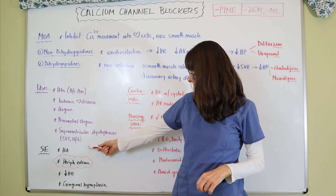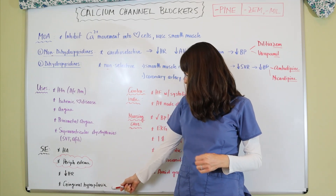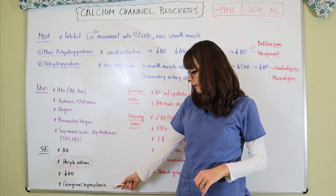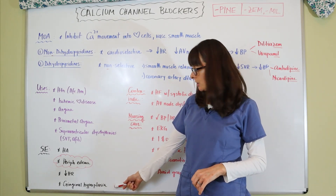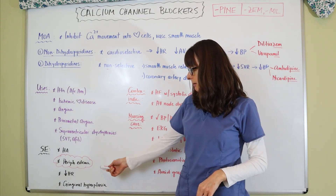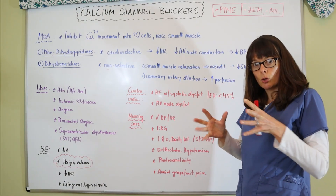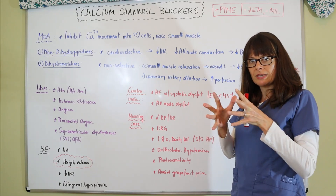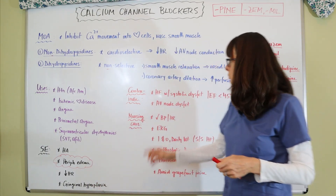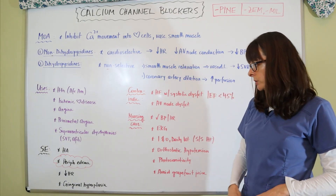Common side effects include headache, peripheral edema, bradycardia, and gingival hyperplasia. Gingival hyperplasia is also caused by Dilantin, an anti-seizure medication. The peripheral edema occurs because vasodilation causes fluid to seep out of the dilated arteries. Bradycardia results from slowing conduction through the AV node — if slowed too much, bradycardia occurs.